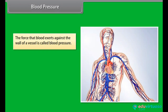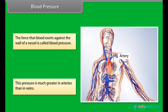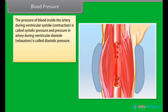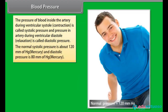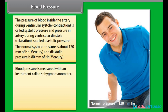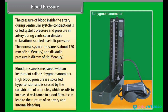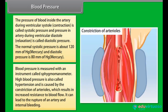The force that blood exerts against the wall of a vessel is called blood pressure. This pressure is much greater in arteries than in veins. The pressure of blood inside an artery during ventricular systole (contraction) is called systolic pressure, and the pressure during ventricular diastole (relaxation) is called diastolic pressure. The normal systolic pressure is about 120 mm of mercury and diastolic pressure is about 80 mm of mercury. Blood pressure is measured with an instrument called a sphygmomanometer. High blood pressure, called hypertension, is caused by the constriction of arterioles, which increases resistance to blood flow and can lead to the rupture of an artery and internal bleeding.